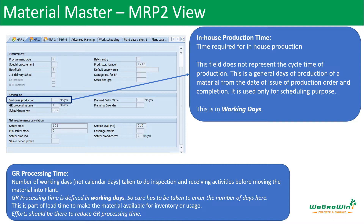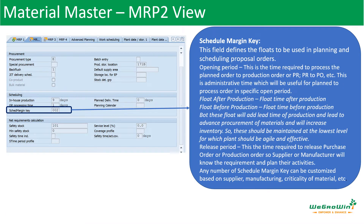In-house production time is in working days. Planned delivery time is for calendar days. GR processing time requires working days. Schedule margin key: the opening period is a plan that is created.